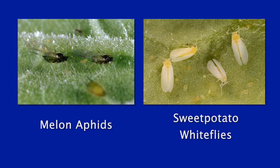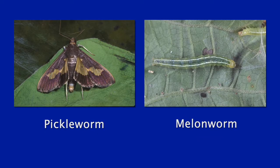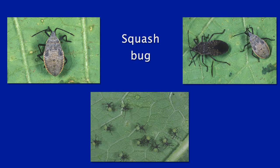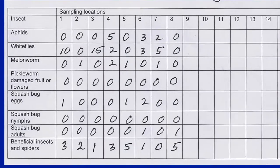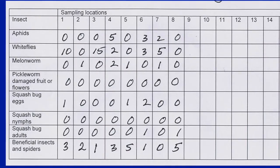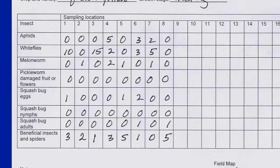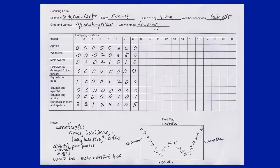For here I would have aphids and whiteflies, as you mentioned, but also pickleworm, melonworm — two of our caterpillar pests — and perhaps squash bug, which has been a problem in recent years. I also leave a column for beneficial insects so I can make a note if there are a lot of beneficials there. Then you can total and average those counts. If thresholds are available, you can use those numbers directly to make a decision on whether you need to treat. Otherwise, you can plot those numbers over time from week to week — is the population going up, going down, or staying the same? — and use that information to help make a decision.